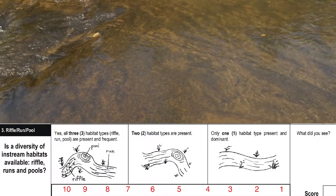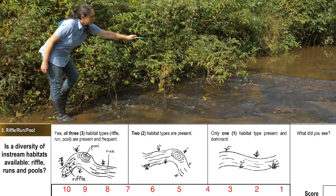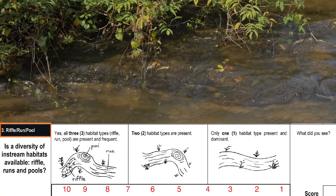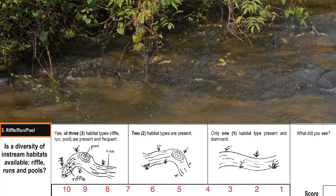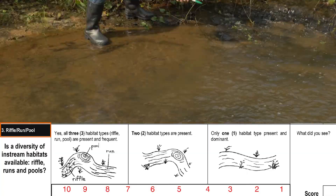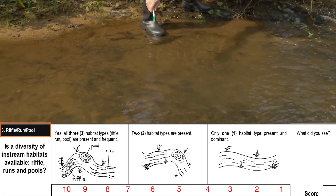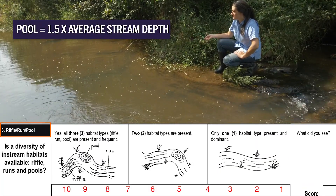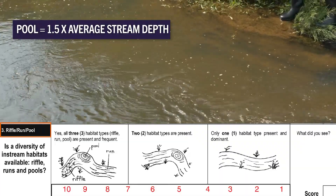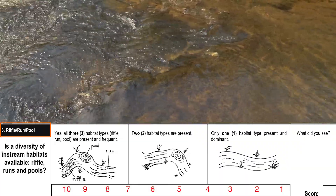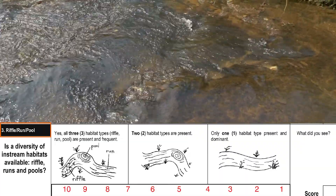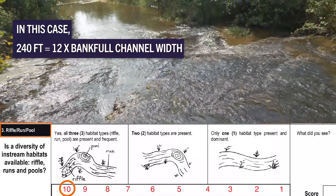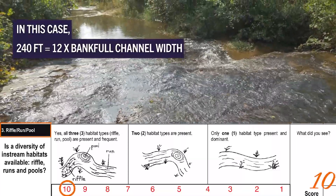Many of these conditions are a numbers game, and riffle, run, pool is certainly that. A riffle is an area where water is traveling over rocks and disturbances. A run is the straight section of flow. A pool is an area of the stream that is 1.5 times the average depth of your stream. Count which of these are present within your reach. In the 240-foot reach, there are several natural series of riffles, runs, and pools.